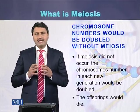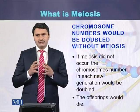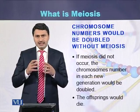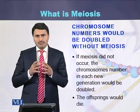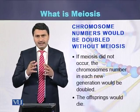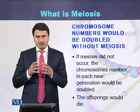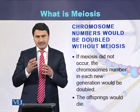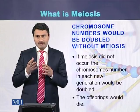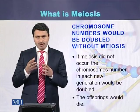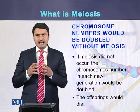What will happen if there is no meiosis? If there is no meiosis, during each generation the number of chromosomes will be doubled. If a cell has 2n chromosomes, during the next generation it will become 4n — from diploid to tetraploid — and in the third generation it will become 8n.